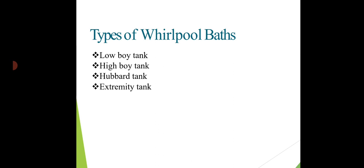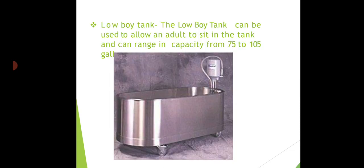The types of whirlpool bath are: low buoy tank, high buoy tank, Hubbard tank, and extremity tank. The low buoy tank can be used to allow an adult to sit in the tank and can range in capacity from 75 to 105 gallons of water.